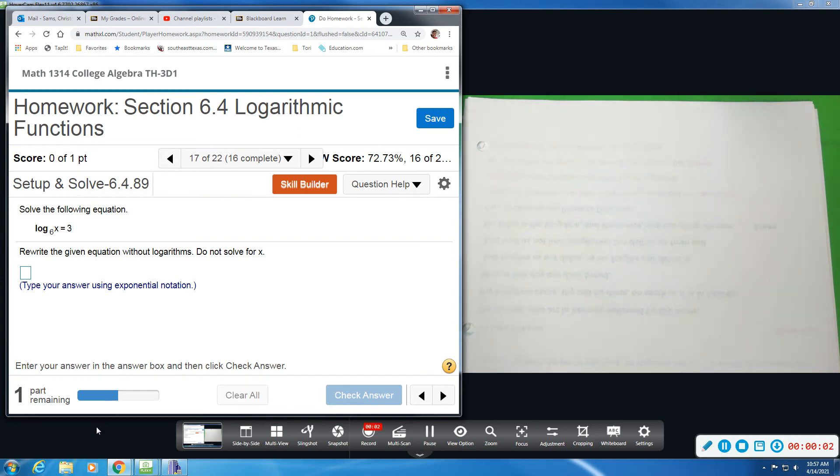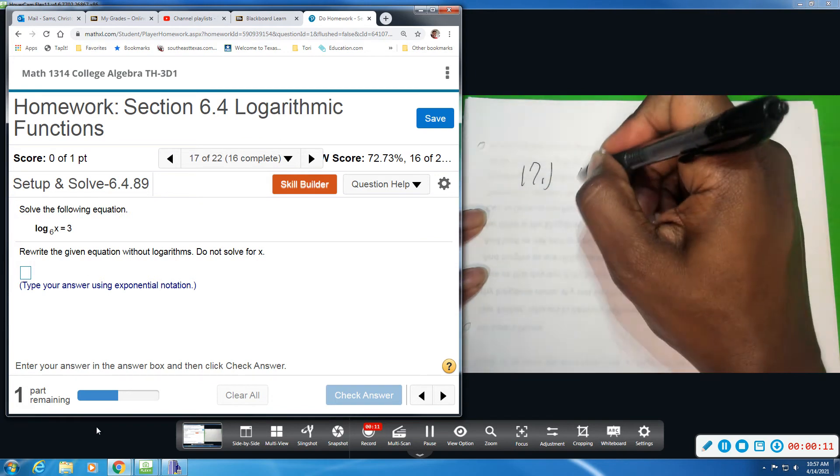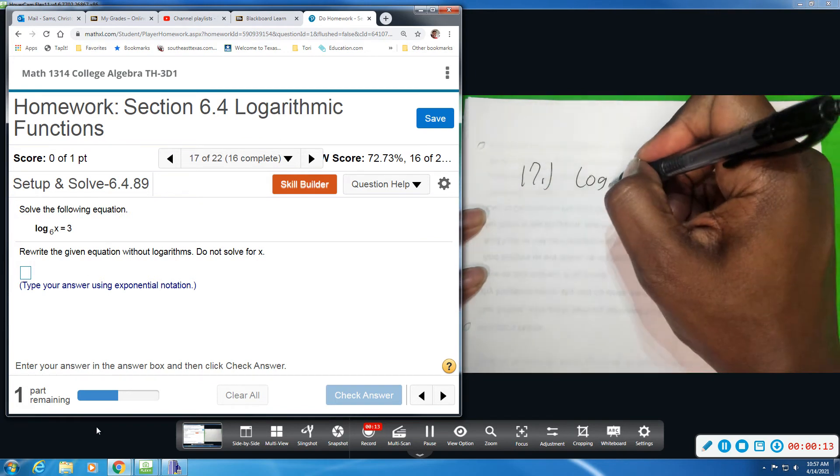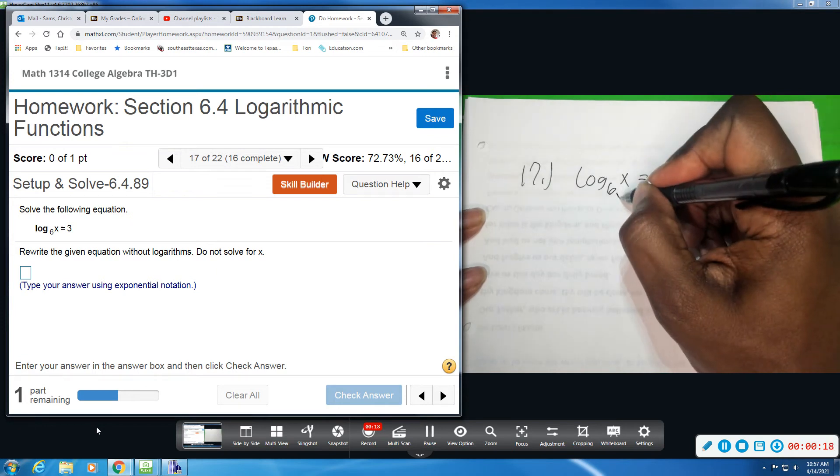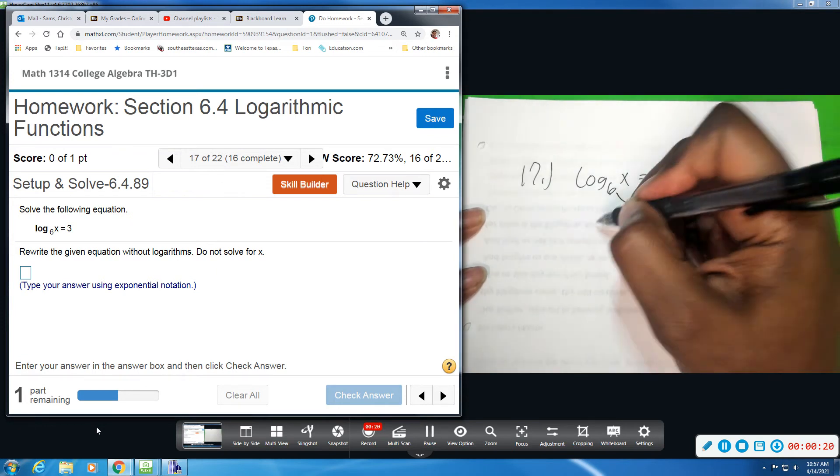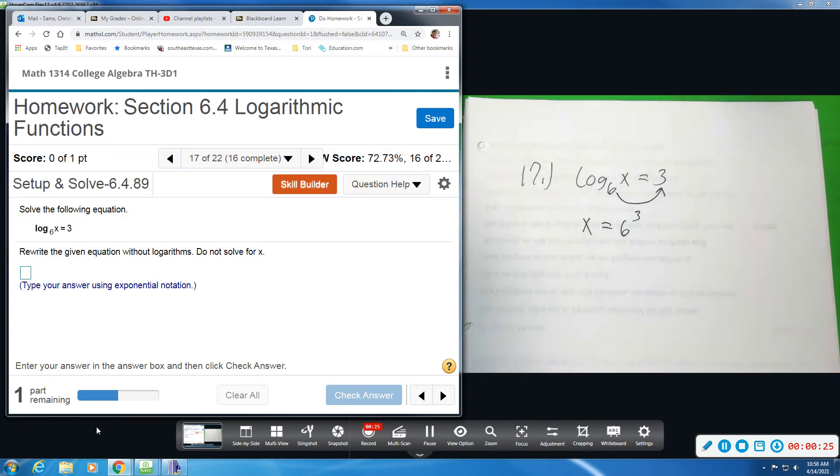Alright, number 17, we have two parts. We want to rewrite the equation without logs. It says do not solve for x. So first we're going to do log base 6 of x equals 3, and you just take this base, bring it over here to that power, and so we get x equals 6 to the third power. So x equals 6 to the power of 3.